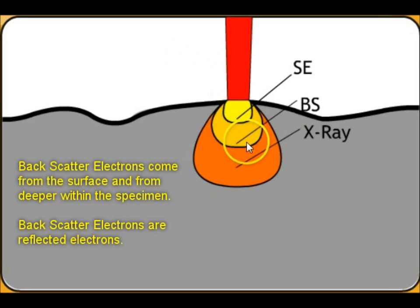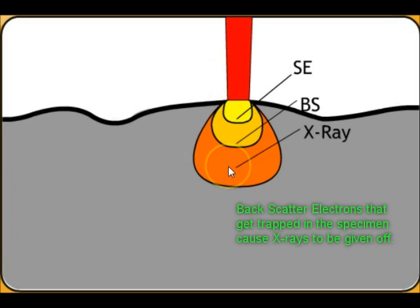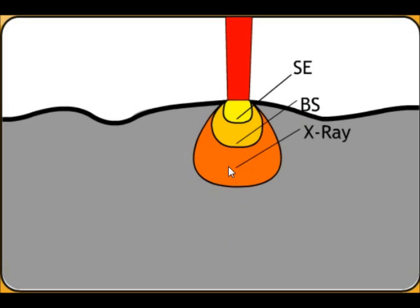The backscatter electrons are going to come from deeper in the specimen. So some will bounce right off the surface. Some will go deeper. And then the ones that are really deep actually never get back out again. So when they get absorbed, they give off x-rays. Now we actually don't have an x-ray detector for our scope. But you can do elemental analysis by using, by looking at x-rays. So the detectors that we have on our scope are the secondary electron detectors and the backscatter detectors.